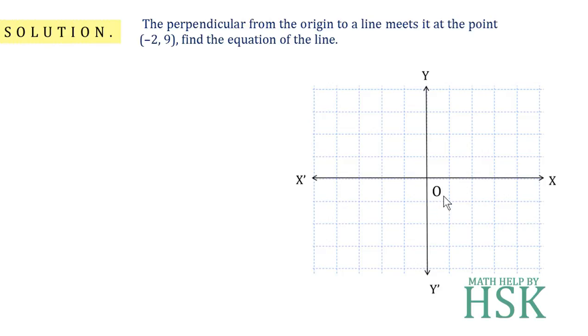is the origin, that is the point of intersection of x-axis and y-axis. Because we have to consider this point (-2, 9) which lies in the second quadrant, I'm going to draw a line in such a way that the line lies in the second quadrant. So I'll draw the required line which